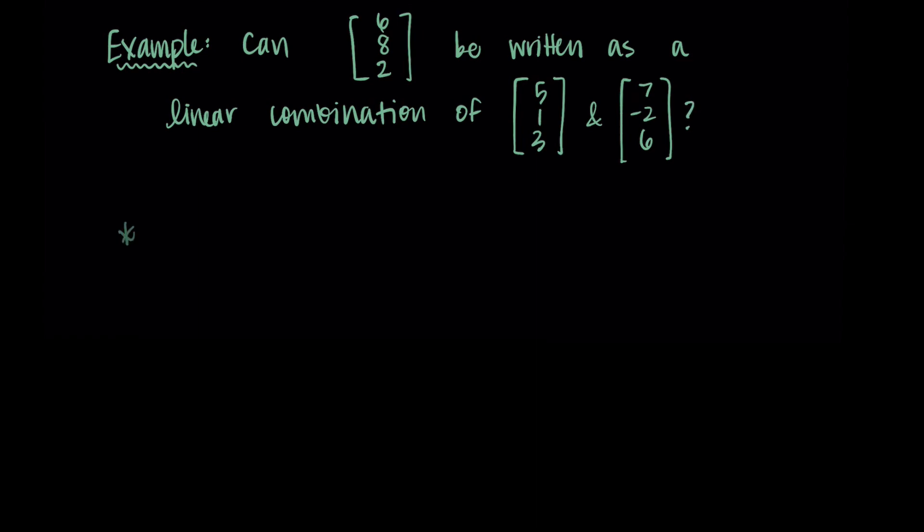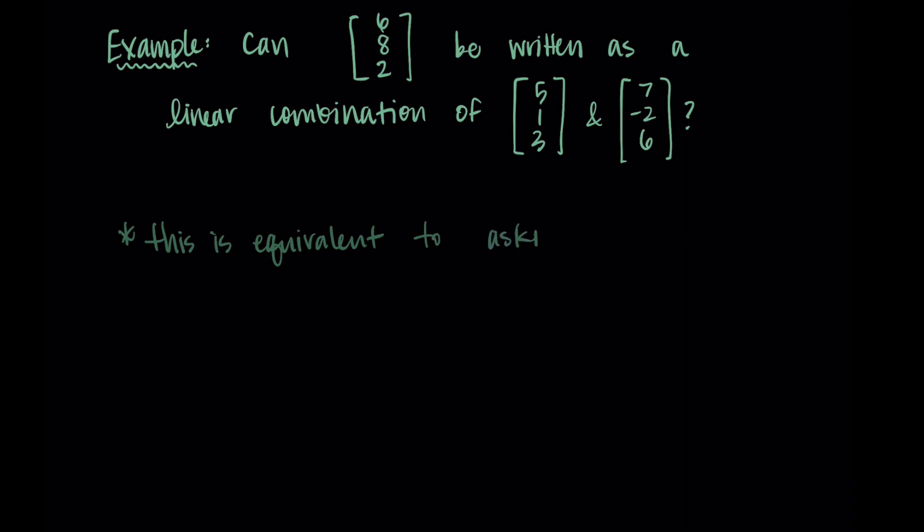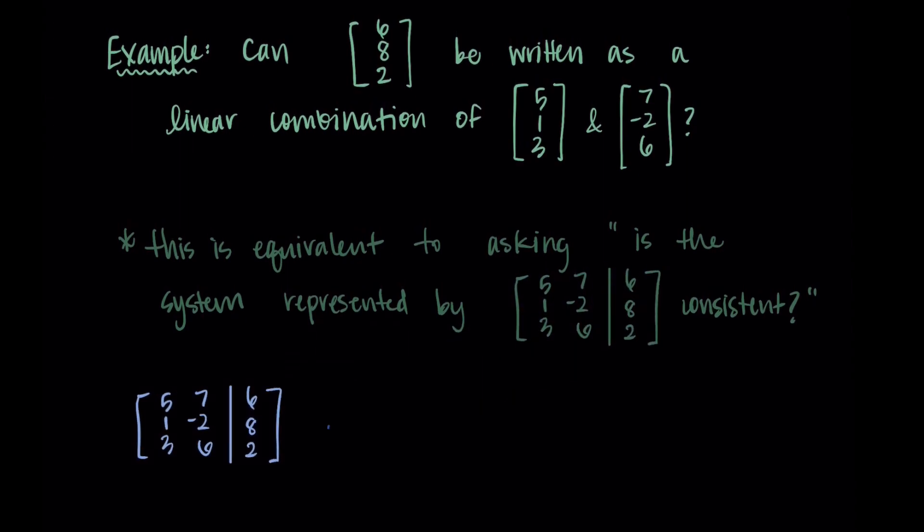So we can say an equivalent question here, similar to the last example. This question is equivalent to asking: is the system represented by the augmented matrix made from these vectors consistent? So we put the two vectors on the left-hand side, and then we augment it with the vector we're trying to achieve with the linear combination. So I want to know, does this augmented matrix represent a consistent system? To determine that, I need to row reduce and see if I end up with any false statements or if I can find weights that work for the linear combination.